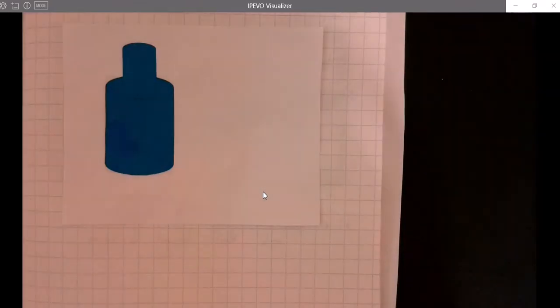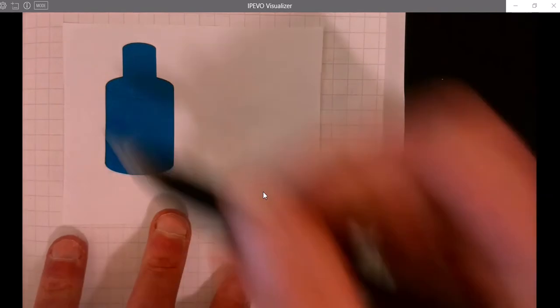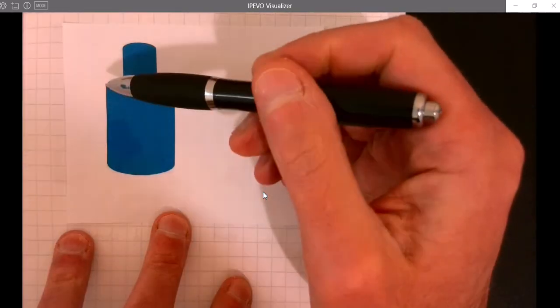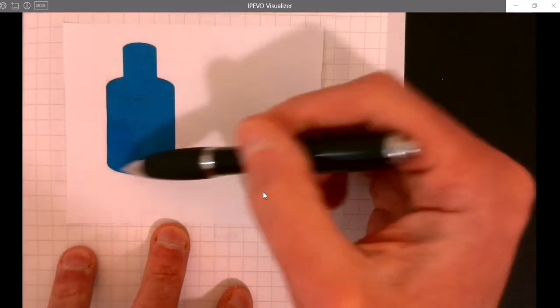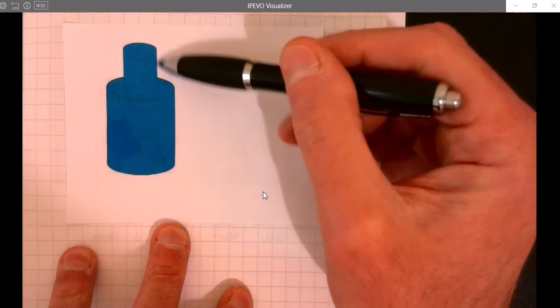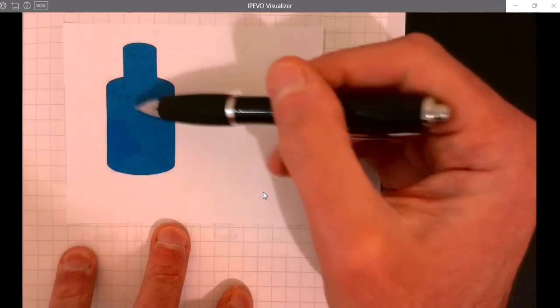We've been looking at surface area of cylinders and what we've actually got here is a big cylinder and a little small cylinder on top of it, so we got stacked cylinders.